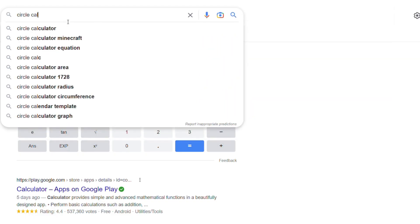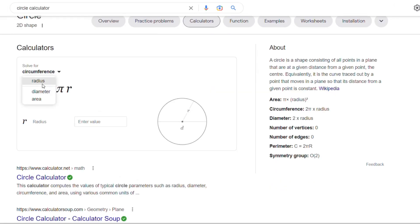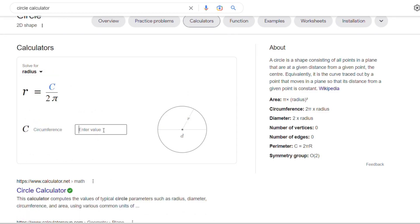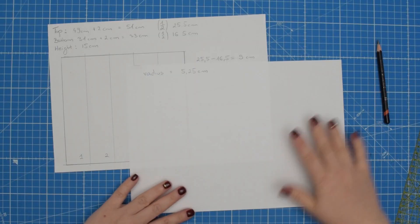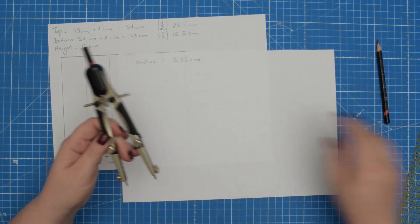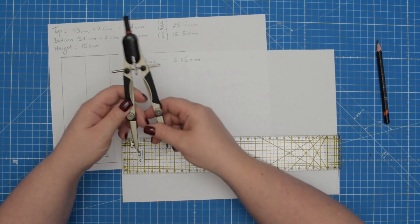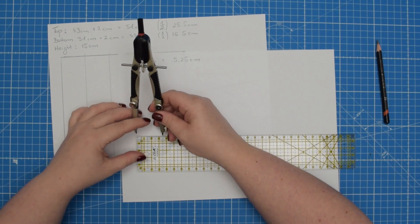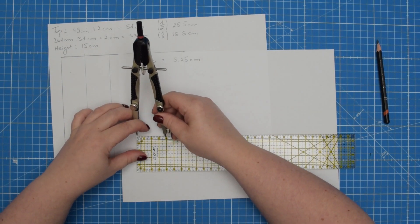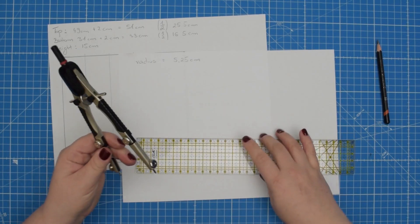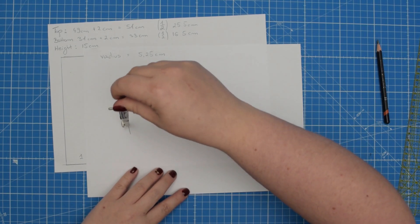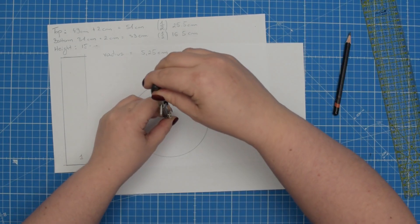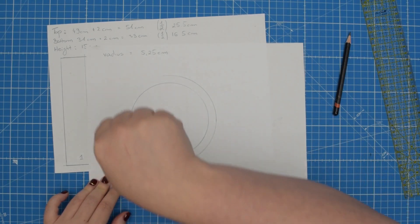The easiest way to do it is to take the full circumference of the bottom edge and use a google circle calculator to find the radius or the diameter of your circle. So for me that is 5.25 centimeters. Then what I like to do is to take my compass and I would measure that radius and simply I can draw a circle. Then you can add 1 centimeter seam allowance.